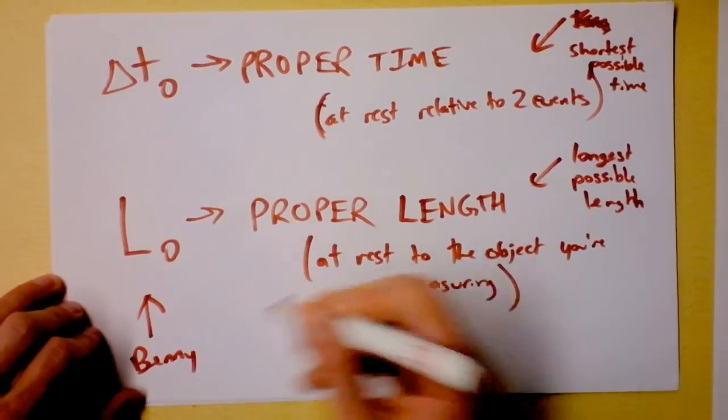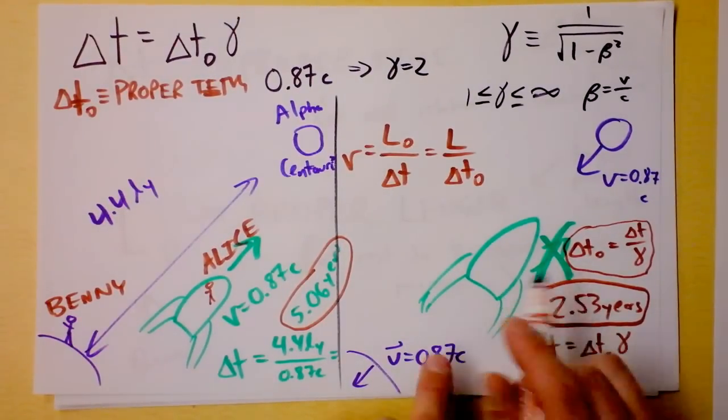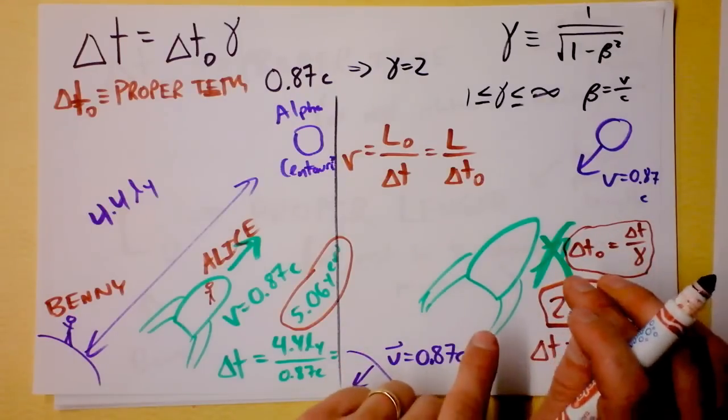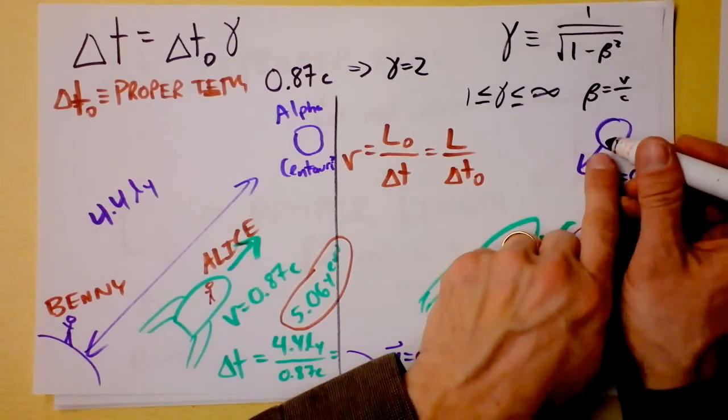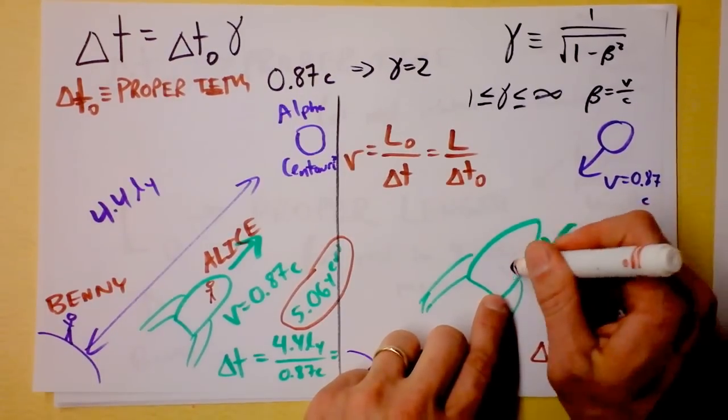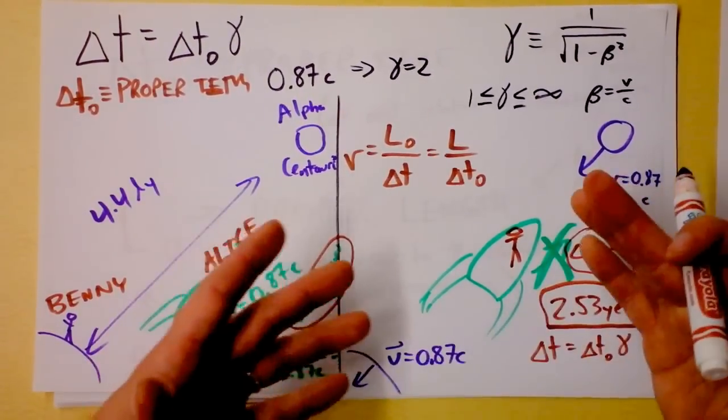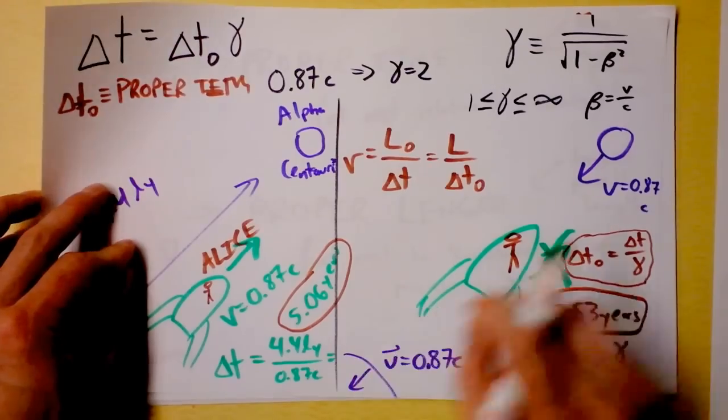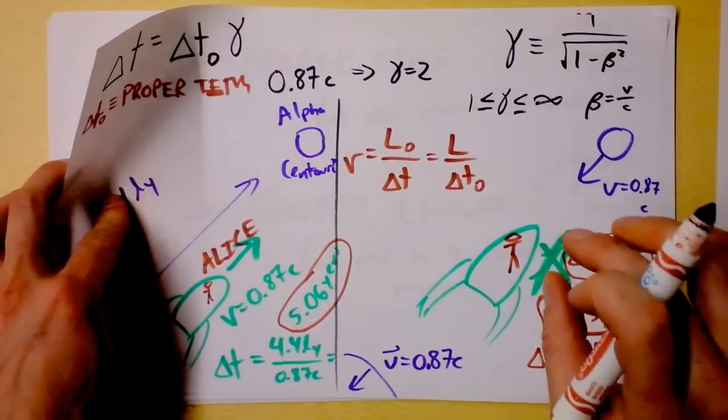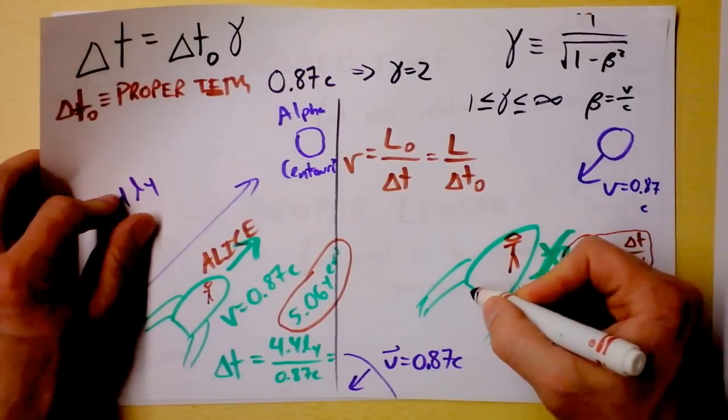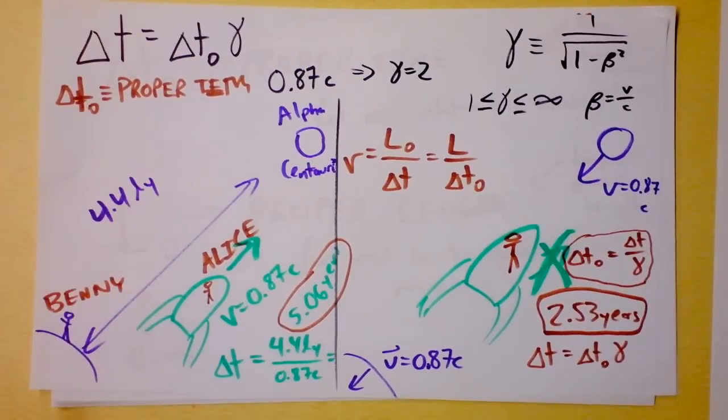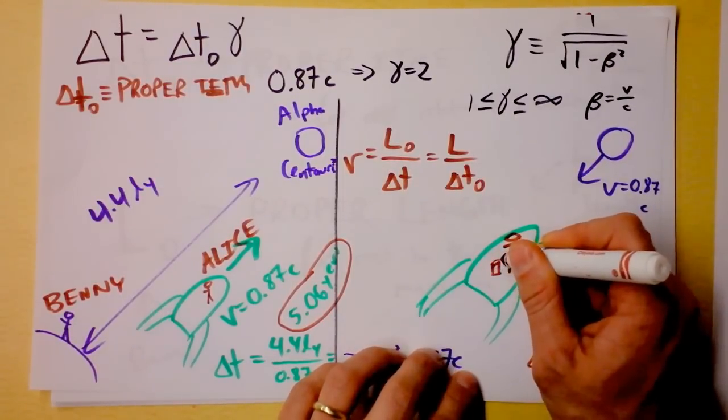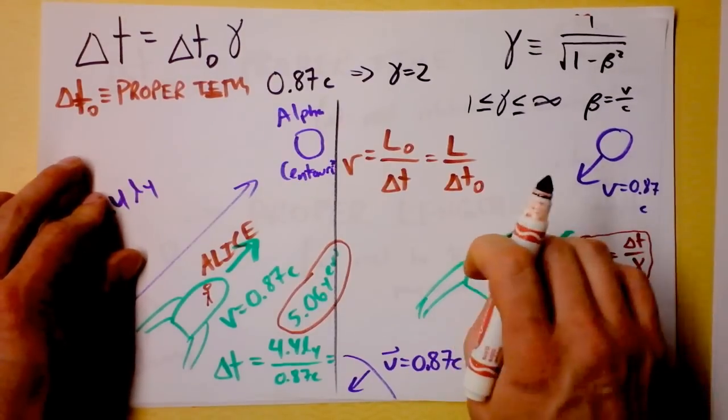And in our case, Benny measures that. Alice, on the other hand, is not at rest relative to Alpha Centauri and Earth. In fact, Alpha Centauri and Earth seem to be moving relative to her, so she can't measure the proper length. On the other hand, blasting off and landing take place at the same location for Alice. Here she is, and she is blasting off, and then a long time later, she is landing. So she's actually going to measure the proper time because she's at rest relative to the event of blasting off and landing. They take place at the same place for her.